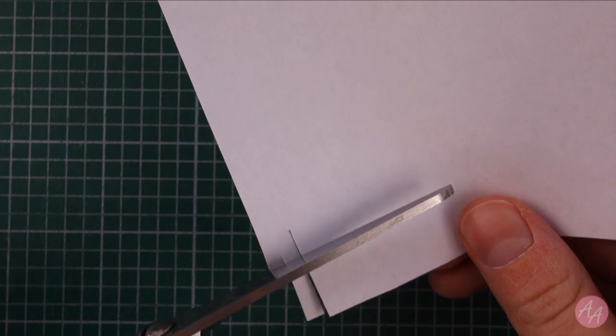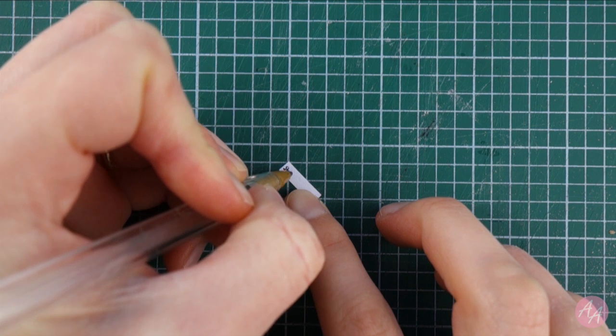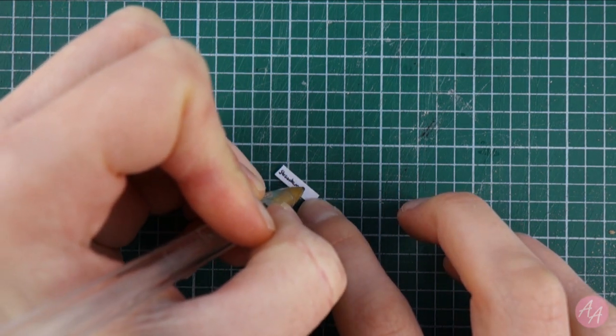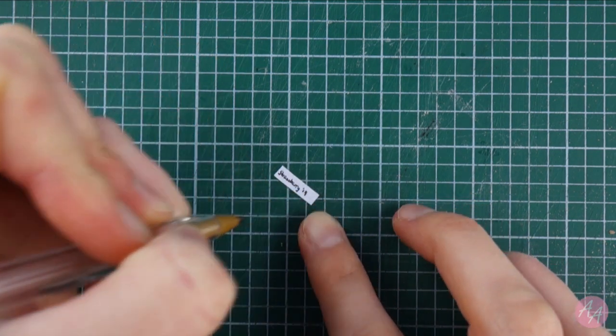To make a label for the jar, I'm cutting a small piece of paper, and then handwriting the flavor, as if this is a homemade jam. I'm also adding the date. I'm going for 2019, because no one wants anything from 2020.